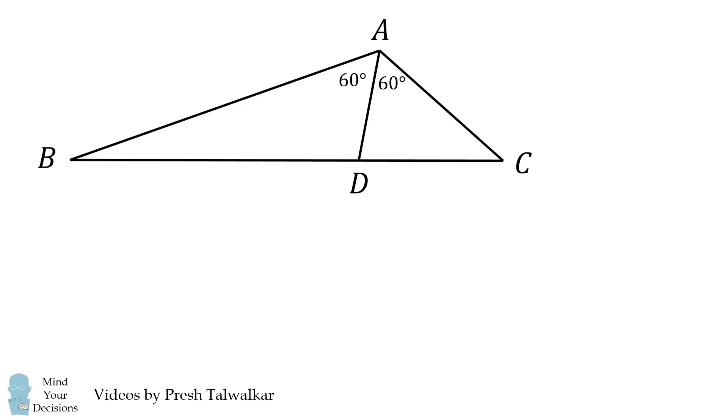So let's get started solving this problem. If AC has a length of x, then AB is equal to 2x. Now, we are going to prove that BD is equal to 2 times DC.